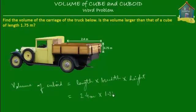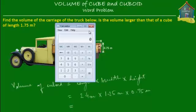The length is 2.4 meters, the breadth is 1.25 meters, and the height is 0.75 meters. So it's a pretty straightforward calculation. All you have to do is multiply these three numbers. I'm going to use a calculator. 2.4 times 1.25 times 0.75, and that's 2.25.